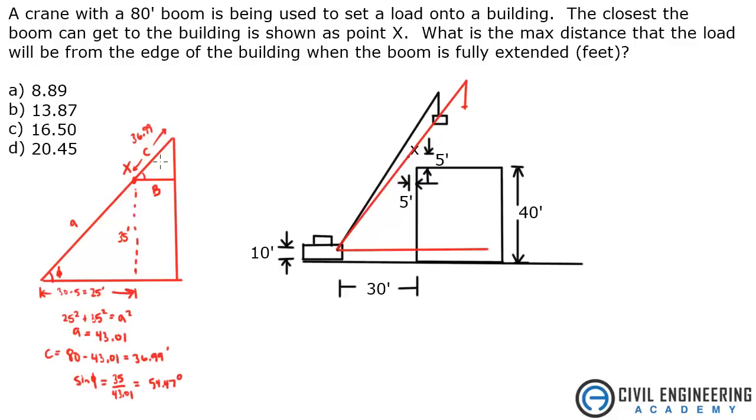Alright, so now all we do is take the cosine of 54.47 degrees, and set that equal to adjacent, which is our B, over hypotenuse 36.99. And I get a value of B of 21.50 feet.